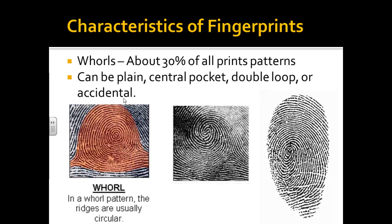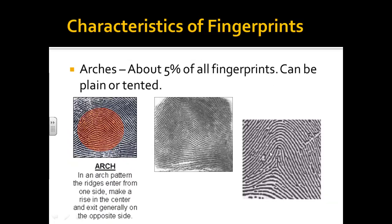Whorls are the next most common — about 30% — and there are several different types. They tend to have a little circular area in the middle. The last type is arches, which make up about 5% of all fingerprints, making them the rarest. There are two types: plain and tented. A plain arch isn't as sharp. An arch enters from one side and exits out the other side of the finger. A tented arch is a little sharper. A loop, by contrast, enters and exits from the same side.